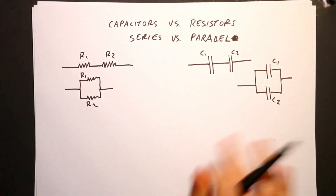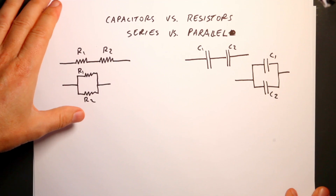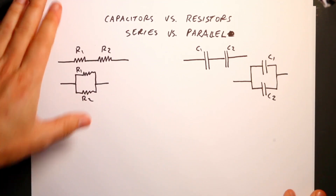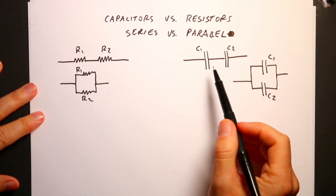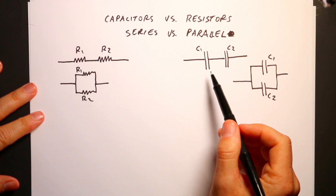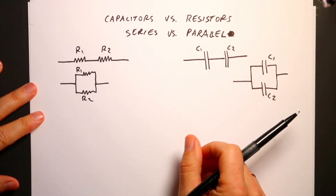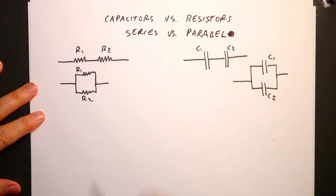I had a question: when you are combining resistors in series versus parallel, and then you do the same thing with capacitors, the equations are kind of like flipped. Why is that? I gave an answer, and I didn't really like my answer, so I'm going to write a new answer.